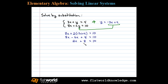Now solving, we have 2x plus 8 equals 10. Since the 8 is on the same side, we subtract 8 from both sides, leaving 2x equals 2. Finally, dividing both sides by 2, we're left with x equals 1.